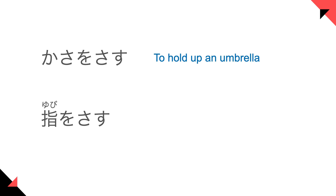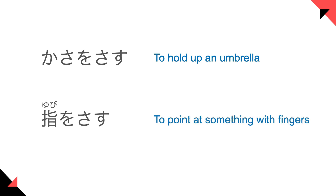KASA is umbrella. YUBI-O SASU — that means to point at something or someone with fingers. YUBI means fingers.